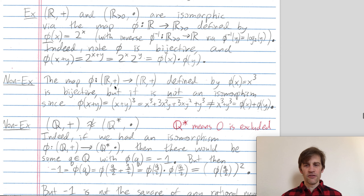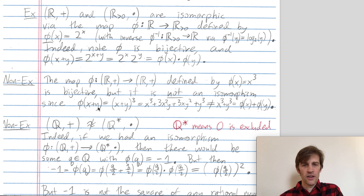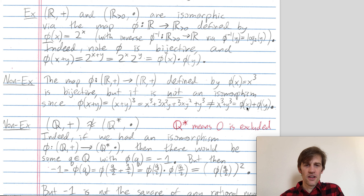By contrast, the map phi from the reals to the reals defined by phi(x) = x³ is a bijection — it is one to one and onto — but it is not an isomorphism; it doesn't preserve the group structure. We can check: phi(x + y) = (x + y)³ = x³ + 3x²y + 3xy² + y³, whereas phi(x) + phi(y) = x³ + y³. In general these two things are not equal, so this map does not preserve the group structure and is not an isomorphism.